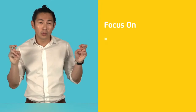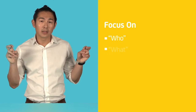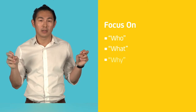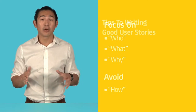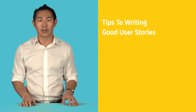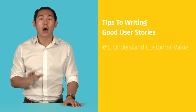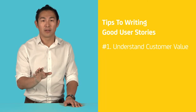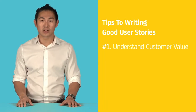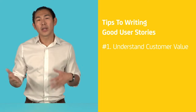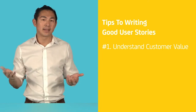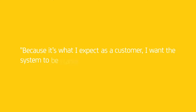The story should focus on the who, what, and why — not the how. Here are a few tips for writing a good user story. Always put yourself in the mind of your customer and the value they will derive. An okay user story might say, 'Because it's what I expect as a customer, I want the system to be stable.'